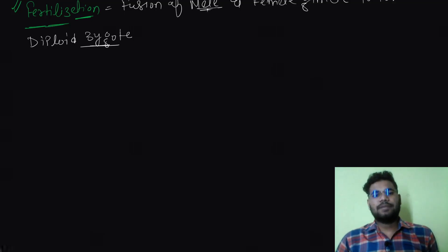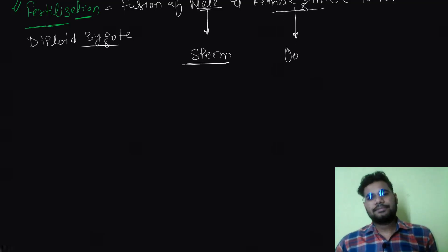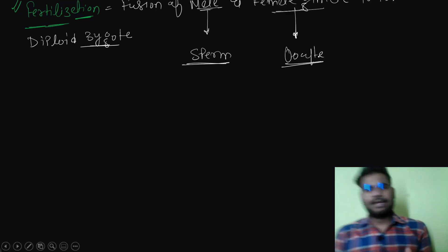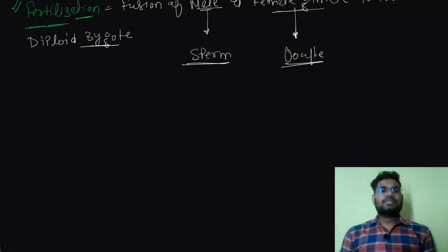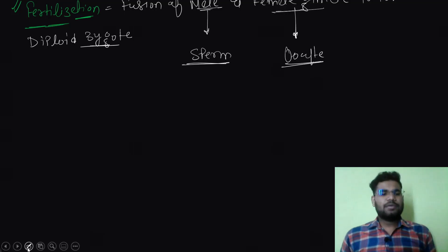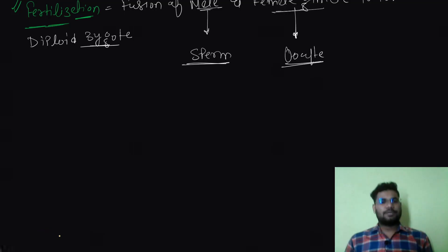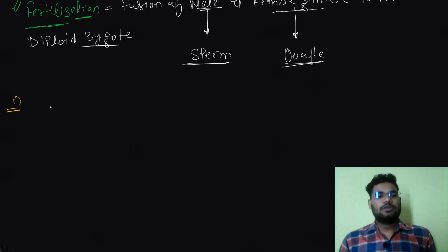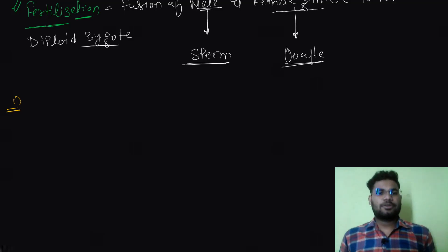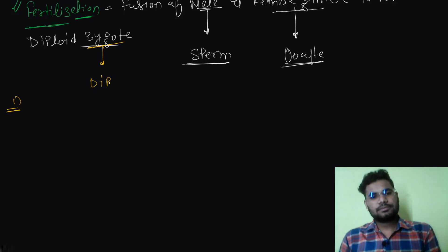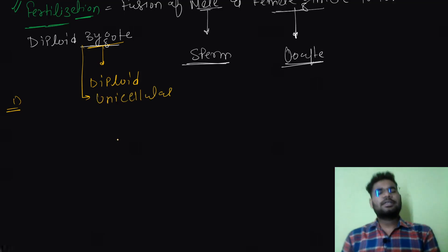The male gamete is the sperm and the female gamete is the oocyte — specifically the secondary oocyte. The end result of fertilization would be the formation of a zygote. The male pronucleus and the oocyte pronucleus fuse to form the zygote, which is a diploid and unicellular structure.